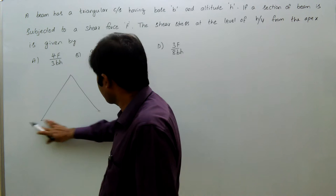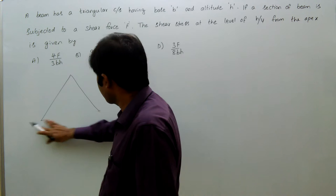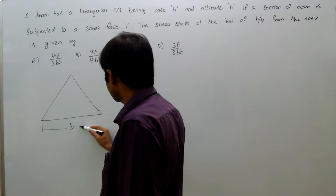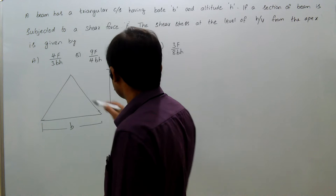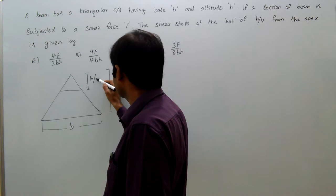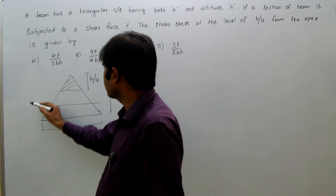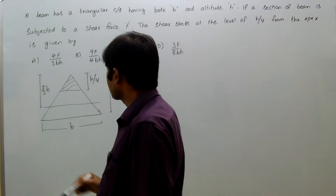This is the triangle of base B and height H. From apex H by 4, this is the area. And we know the neutral axis is at a distance of 2 third of H.